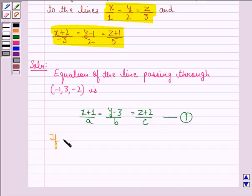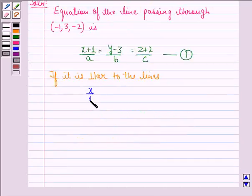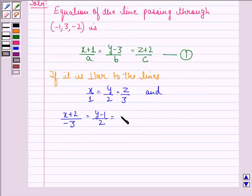Now, if it is perpendicular to the lines x upon 1 equal to y upon 2 equals to z upon 3 and x plus 2 divided by minus 3 is equal to y minus 1 upon 2 equals to z plus 1 upon 5, therefore,